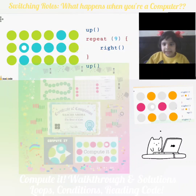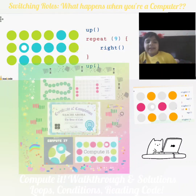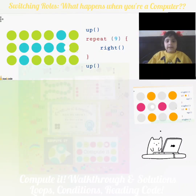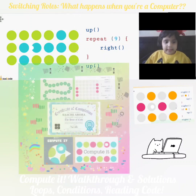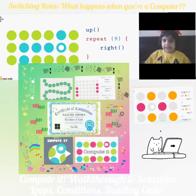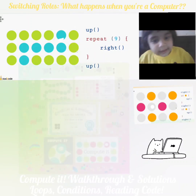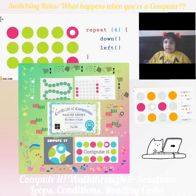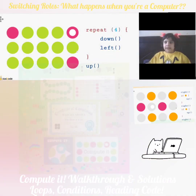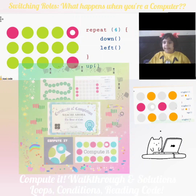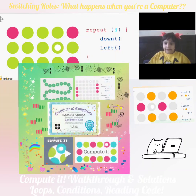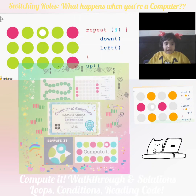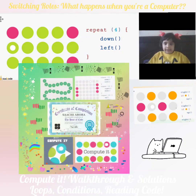Up. Repeat nine times. Let's count: 1, 2, 3, 4, 5, 6, 7, 8, 9. And let's go up. And repeat four times — we're gonna go down, left, down, left, down, left, down, left.